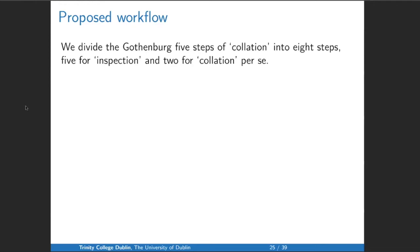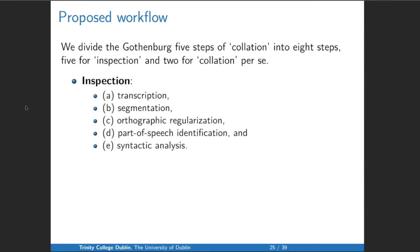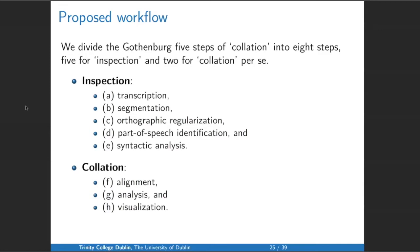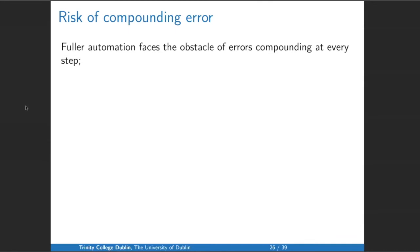This is my proposed workflow. We divide the Gothenburg five steps of collation into eight steps — five for inspection and two for collation. The inspection steps consist of transcription, segmentation, orthographic regularization, part-of-speech identification, and syntactic analysis. Collation consists of alignment, analysis, and visualization. The last three steps are in principle automated, but the first five are not yet.